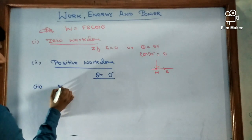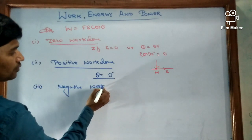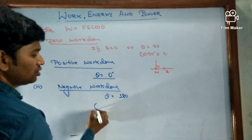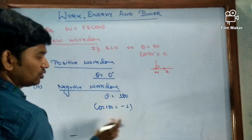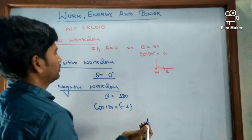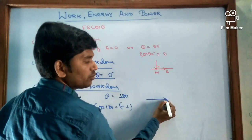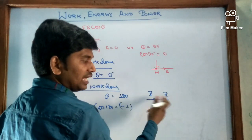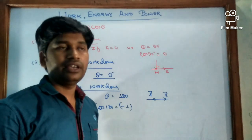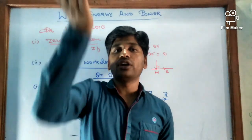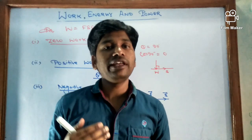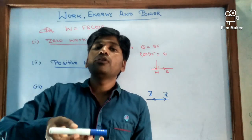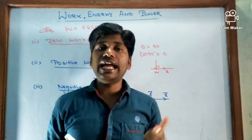For negative work done: θ = 180°, and cos 180° = −1. For example, work done by friction force — if a body is moving in one direction, friction acts in the opposite direction, so the angle between them is 180° and work done by friction is negative. Similarly, if we throw an object upward, work done by gravitational force is negative, because the displacement is upward and gravitational force pulls downward, making the angle 180°.